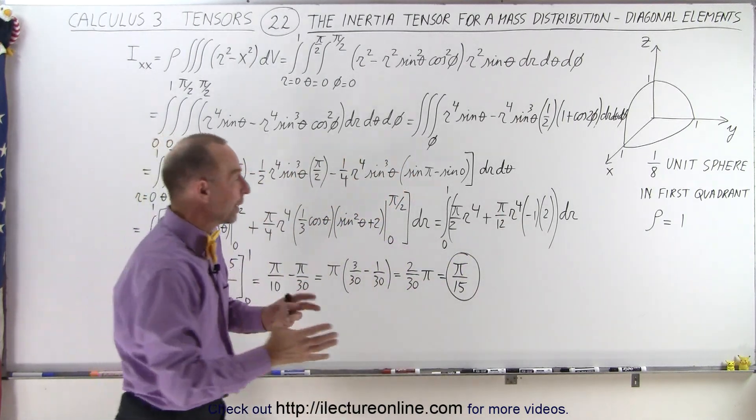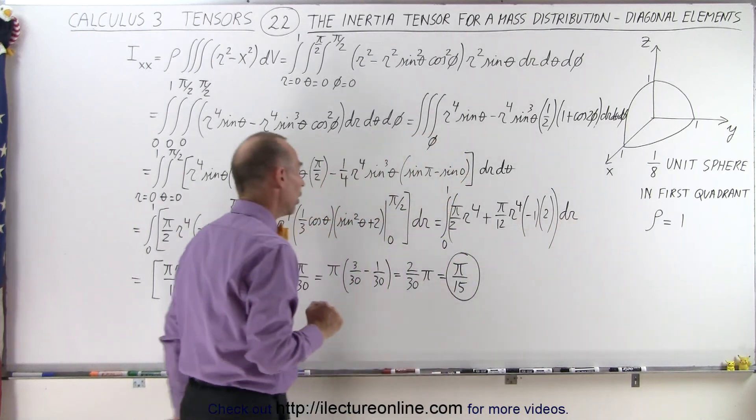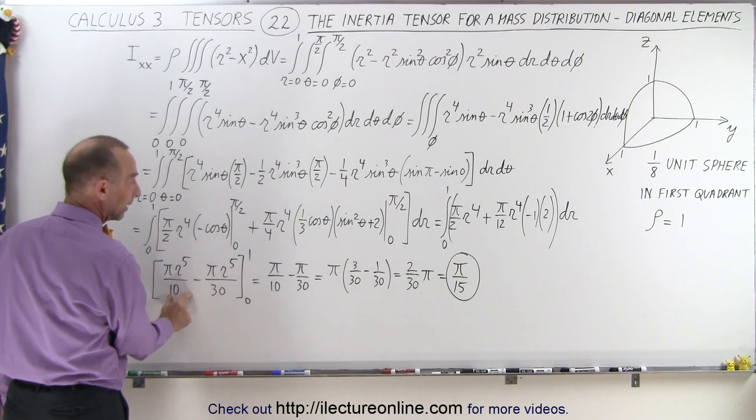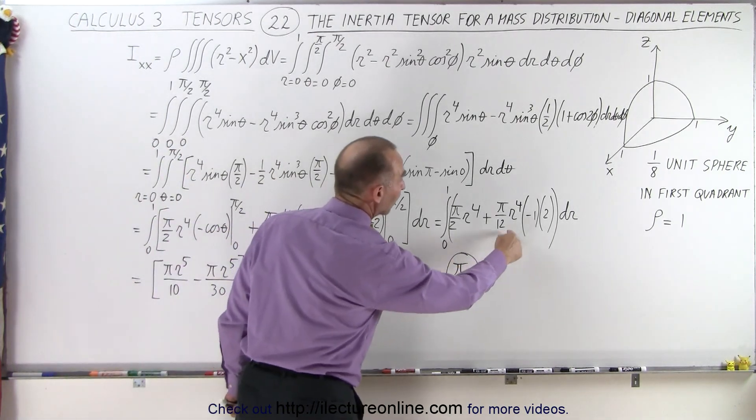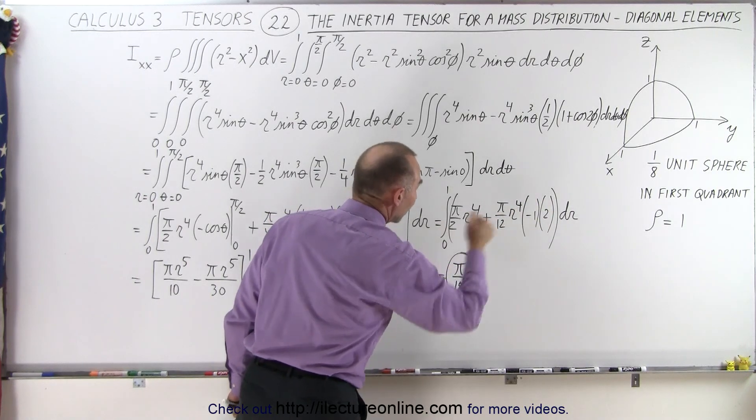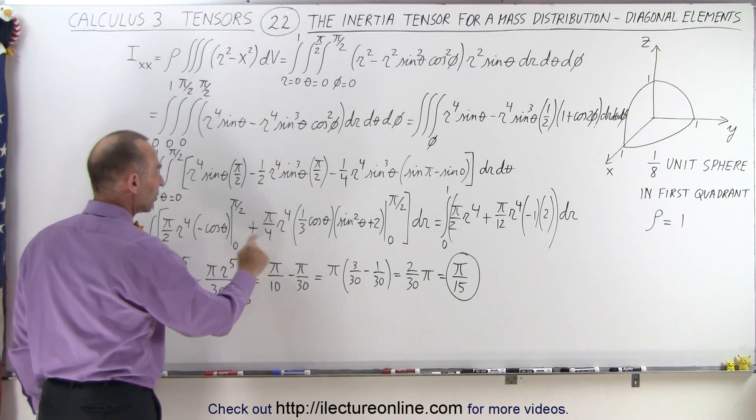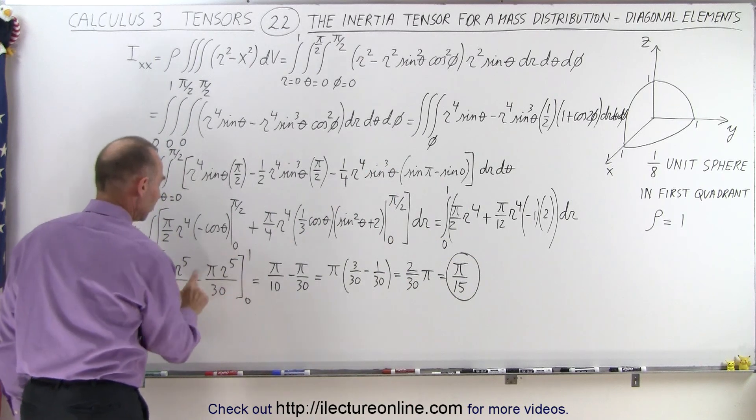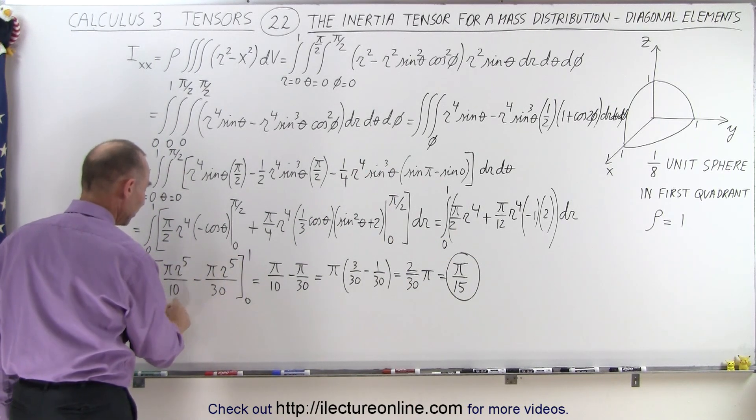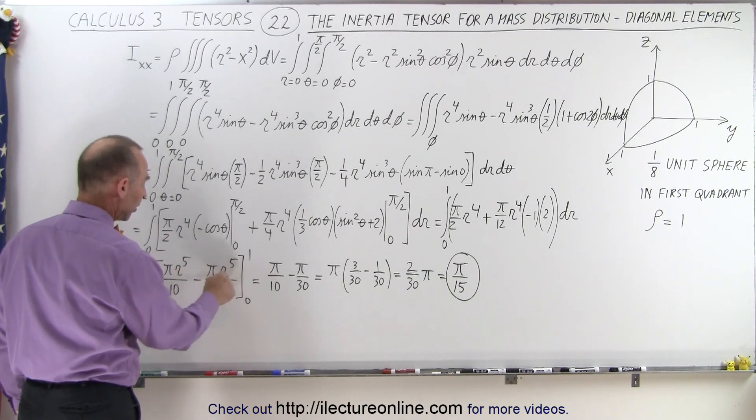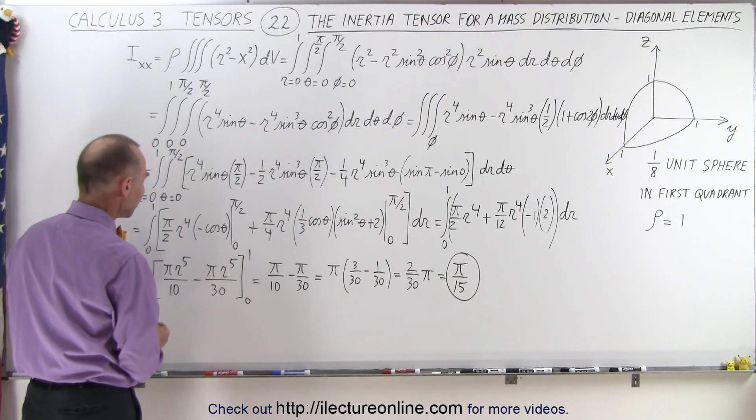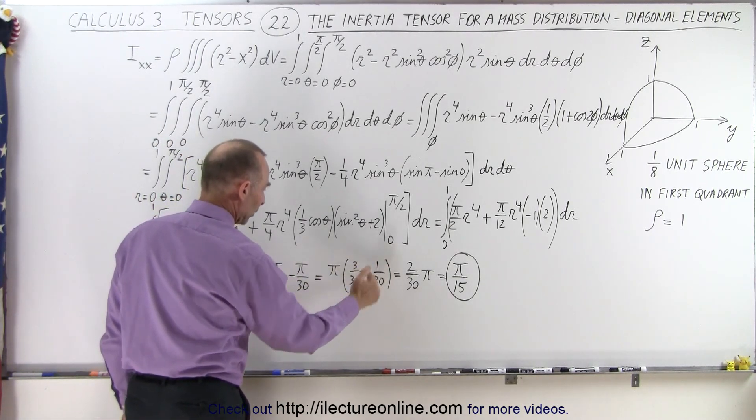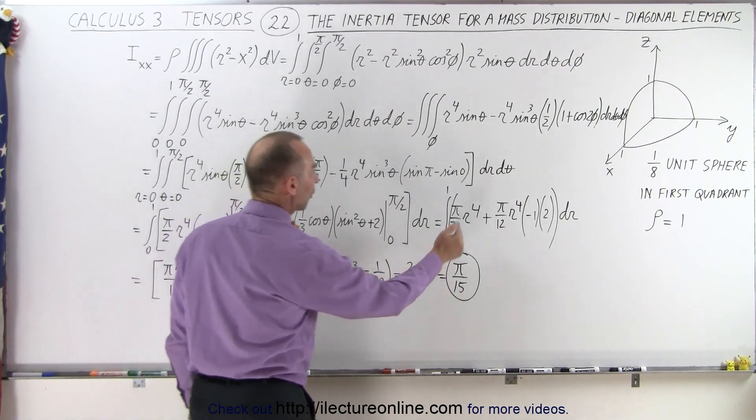So we have a dr there. When we integrate, we get pi r to the fifth over 5, but 5 times 2 gives me 10, and over here in the denominator, now we have a 6, right, 2 divided by 12 is 1 over 6, so we have pi over 6. But when we integrate r to the fourth, we get r to the fifth over 5, 5 times 6 is 30. So now we have pi over 10, because when we plug in the upper limit, we get 1 for r, the lower limit we get 0, so we can drop that. So we get pi over 10 minus pi over 30, factor out a pi, we get 3 over 30 minus 1 over 30, we get 2 over 30 times pi, or pi over 15.